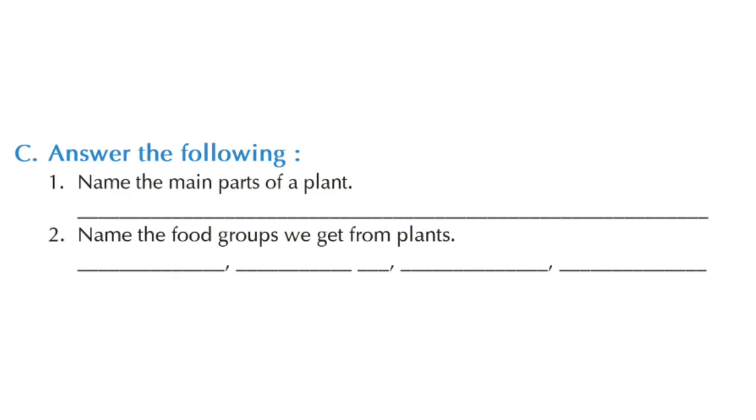Next, let's do question C. Answer the following. Children, question one has already been done in the last class. So let's do question two. Name the food groups we get from plants. We get fruits, vegetables, nuts, pulses.